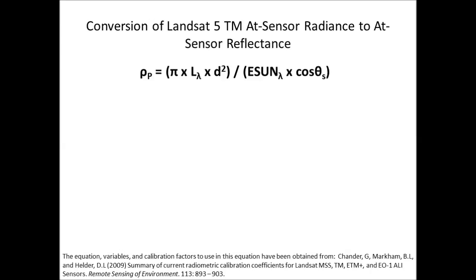Let's look at the conversion of Landsat 5 thematic mapper at-sensor radiance data to at-sensor reflectance. This is after we've obtained the raw digital numbers and converted that to at-sensor radiance, and we're going to the next step to get at-sensor reflectance.